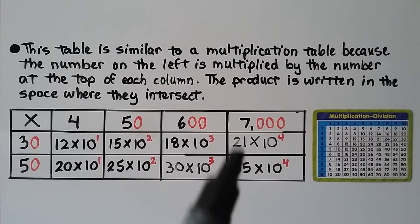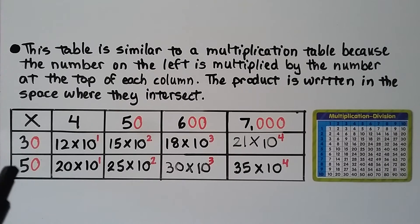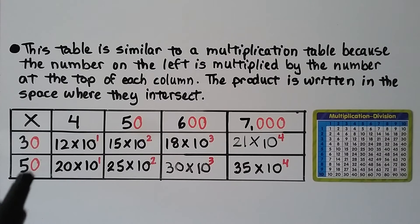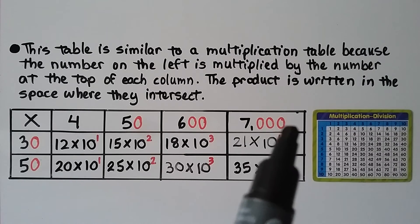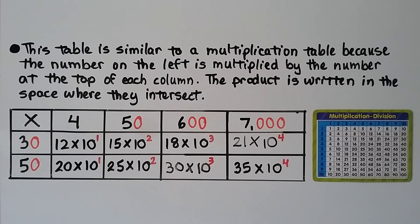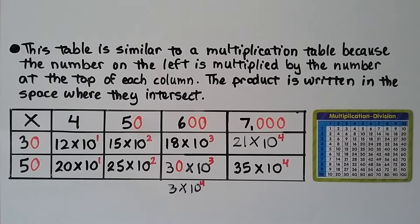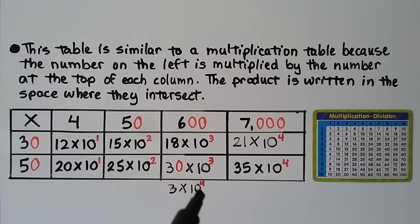50 times 7,000: basic fact 5 times 7 is 35, four zeros, so 35 times 10 to the fourth power. Because 30 has a zero, we can also write this as 3 times 10 to the fifth power — moving the zero from 30 over to increase the exponent by one.